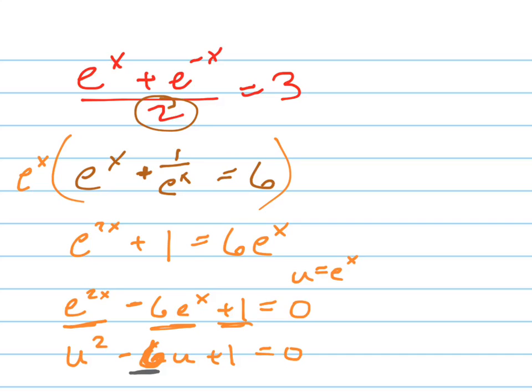Take half of that, which is negative 3, and square it. And you get what? Positive 9, and also subtract 9. And now factor this right here.